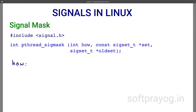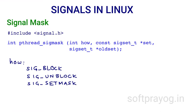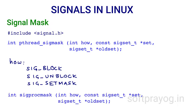pthread_sigmask is the call for changing the signal mask for a thread. The first parameter HOW can be SIG_BLOCK, meaning the new signal mask should include the signals in the set; SIG_UNBLOCK, meaning the new signal mask should exclude the signals in the set; or SIG_SETMASK, meaning signals in the set should become the new signal mask replacing the earlier one. The value of the earlier signal mask is returned in the sigset pointed by old set. pthread_sigmask requires linking with -lpthread. sigprocmask is the older system call for changing the signal mask of single-threaded processes; it should only be used for single-threaded processes — if used for multi-threaded processes, the results are unspecified.